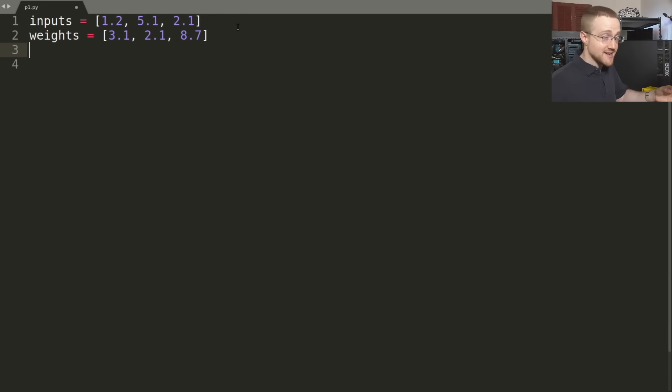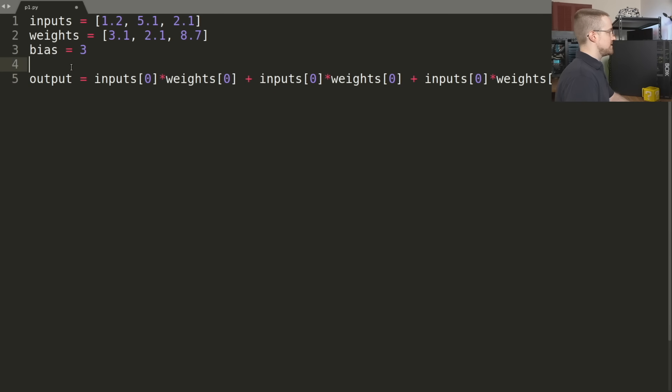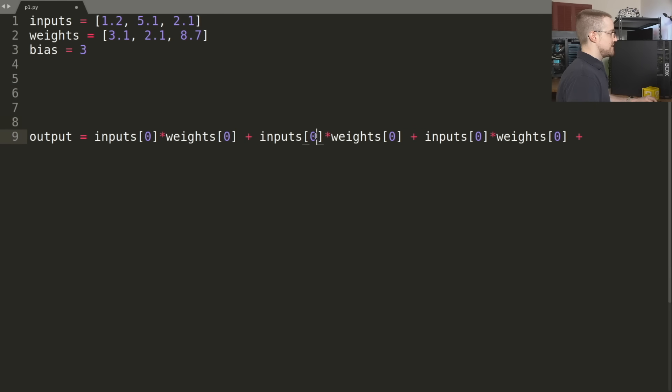You've got your inputs, your weights, and then every unique neuron has a unique bias. So we're going to say bias equals 3. Now the first step for a neuron is to add up all the inputs times the weights plus the bias. This is relatively simple. In very, very raw Python, no loops required at this stage, we're just going to say basically the output so far for this neuron is going to be inputs[0] times the weights at the 0th index, plus - and then I'm just going to copy this - paste, paste, and then we just change the indices to 1, 1, and then 2, 2.